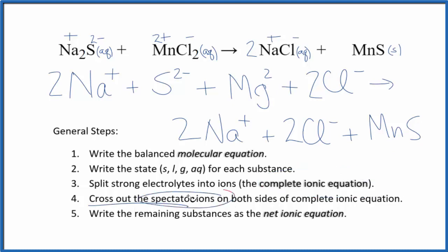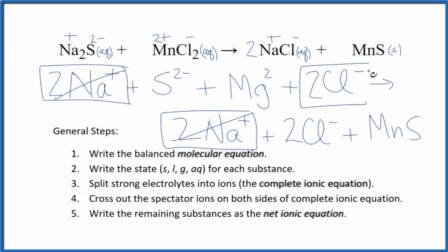Now we can cross out spectator ions. They're on both sides of the complete ionic equation. They haven't really changed, so we're not interested in them. In the reactants, I see 2 sodium ions. And in the products, again, I see 2 sodium ions. Get rid of those. 2 chloride ions. And again, in the products, 2 chloride ions. Get rid of those. And what's left, that's the net ionic equation for Na2S plus MnCl2.